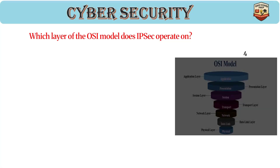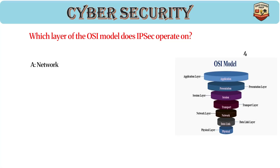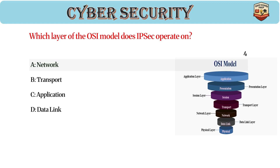Which layer of the OSI model does IPsec operate on? Answer: A, Network. IPsec works at OSI layer 3 (network), secures IP packets with encryption, and is commonly used in VPNs.